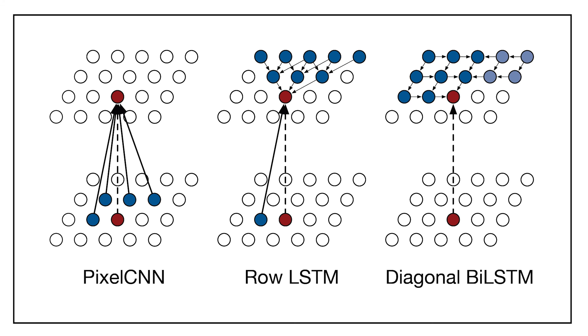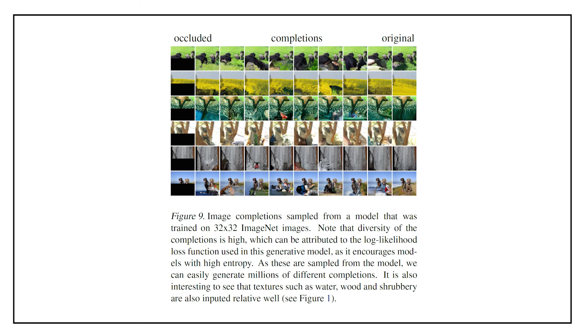The Diagonal BiLSTM has a global view, the Row LSTM has a partially occluded view, and the PixelCNN sees the fewest pixels in the context. Here are some image completions made by a model trained on the ImageNet dataset.